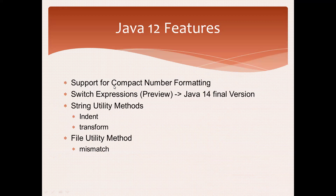The first feature is called Compact Number Formatting. For example, if you have a number like one thousand and you want to display it as 1K, 2K, 3K, or 1 million, 2 million — if you want to define a format for your numbers, there is an API introduced in Java 12 called Compact Number Format.